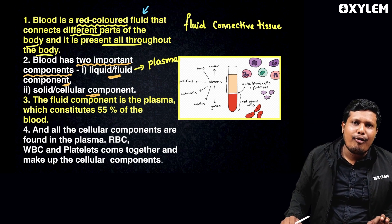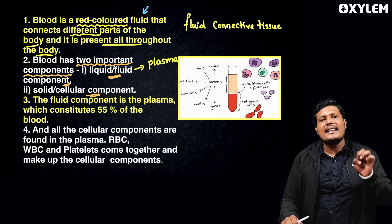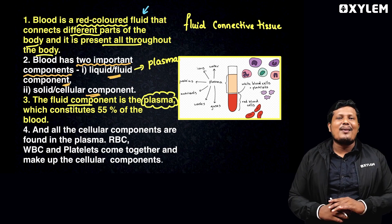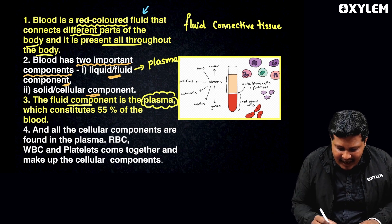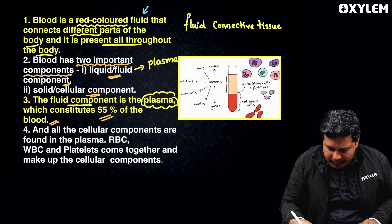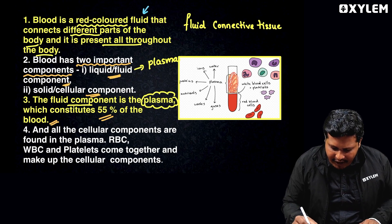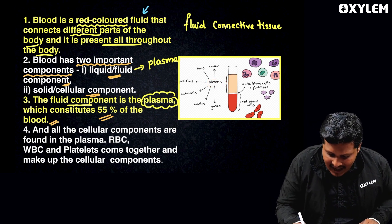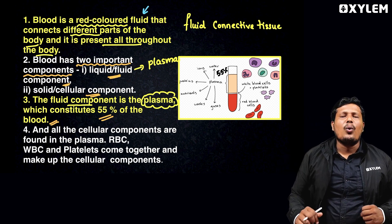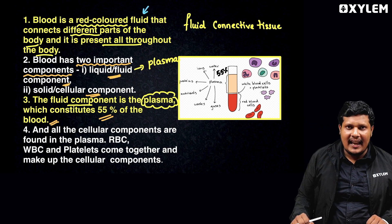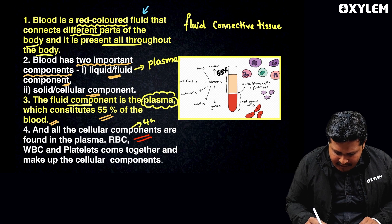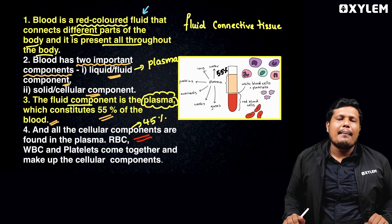Plasma is the fluid component. If you take blood in a test tube and centrifuge it, plasma makes up 55% of the blood. The remaining 45% is the cellular component.